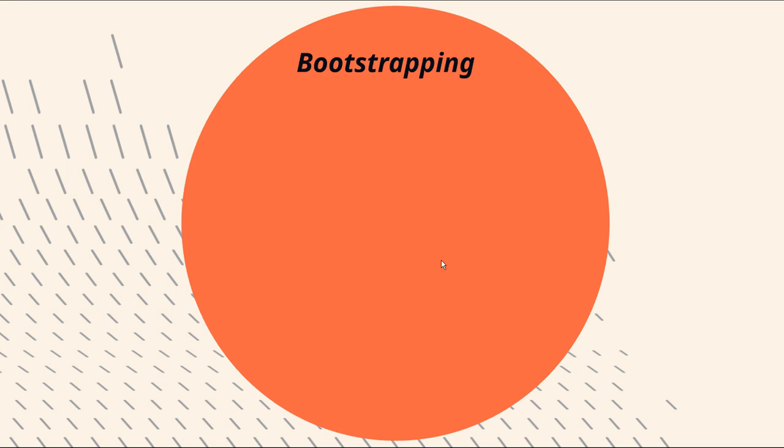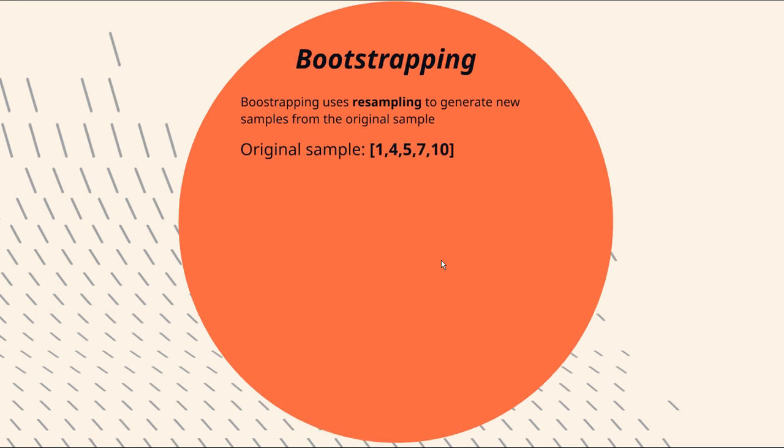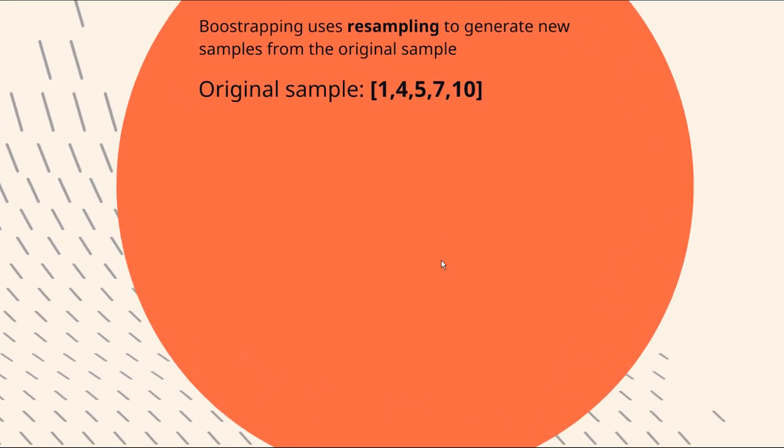So let's have a look at bootstrapping now. As I've said here, bootstrapping uses resampling to generate new samples from the original sample. So let's just say we have an original sample 1, 4, 5, 7 and 10. Let's zoom in a little bit. What bootstrapping does is it takes a similarly sized sample out of the original sample with replacement. So what does all that garbage mean?